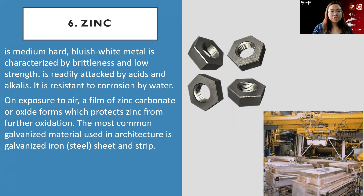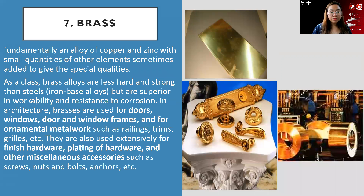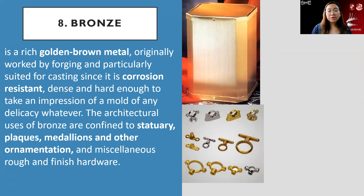Zinc is a medium hard, bluish-white metal. The most common galvanized material used in architecture is galvanized iron sheet and strip. Brass is commonly seen in doors, windows, door and window frames, and ornamental metalworks — used extensively for finishing hardware, plating of hardware, and other miscellaneous accessories. Bronze is a golden brown metal suited for casting since it is corrosion resistant. In architecture it is used for statuary, plaques, medallions, and other ornamentation — mainly for decorative purposes.